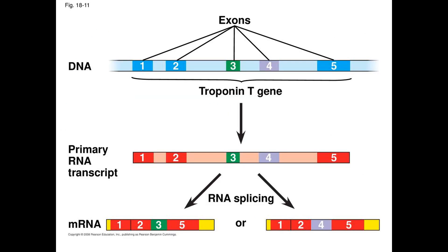Recall that eukaryotes process mRNA before translation, which includes splicing out the introns. Some genes can be spliced in more than one way, by removing one or more exons in addition to the introns. This is known as alternative splicing. How the RNA is spliced is determined by different regulatory proteins, such that a gene is able to produce different proteins.